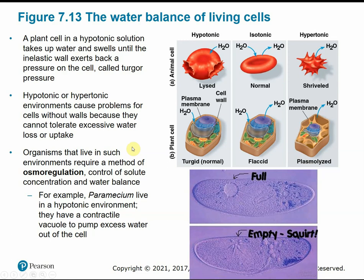Some organisms that live in aquatic environments have to undergo osmoregulation — controlling their solute concentration and water balance on a regular basis because they're always surrounded by different solutions. One example is a paramecium, a single-celled protist that typically lives in a hypotonic environment and would want to take on water through osmosis. To prevent the paramecium from taking on too much water and lysing, it has a contractile vacuole that contracts and expels excess water out of the cell so it doesn't swell too much.